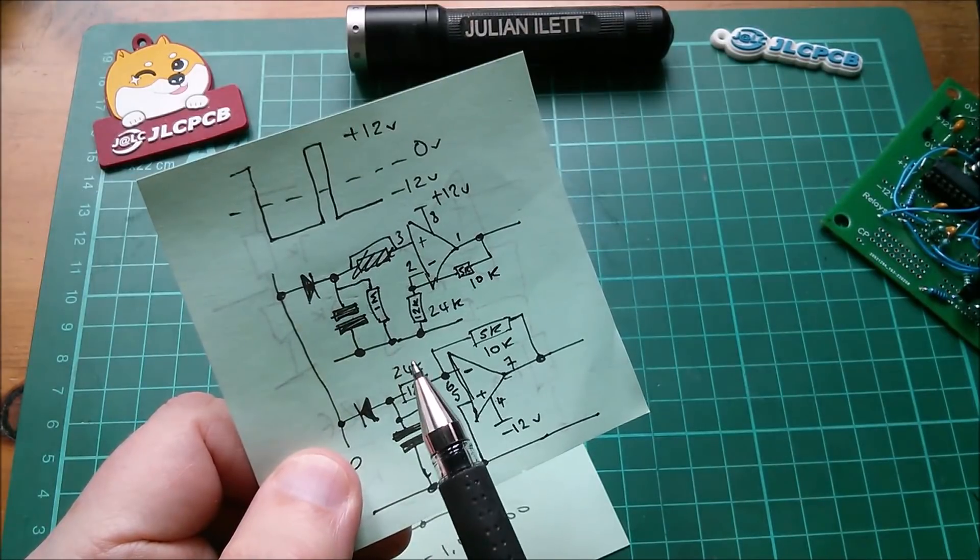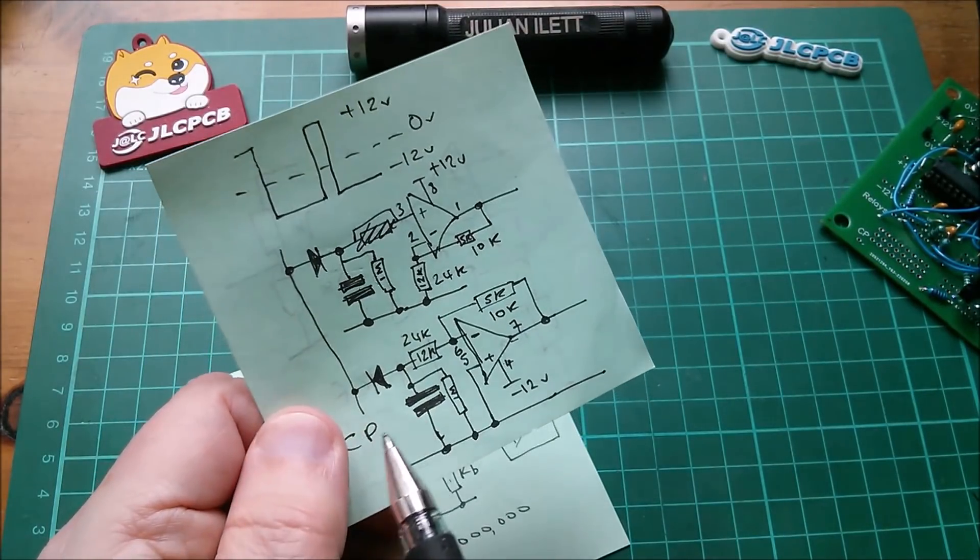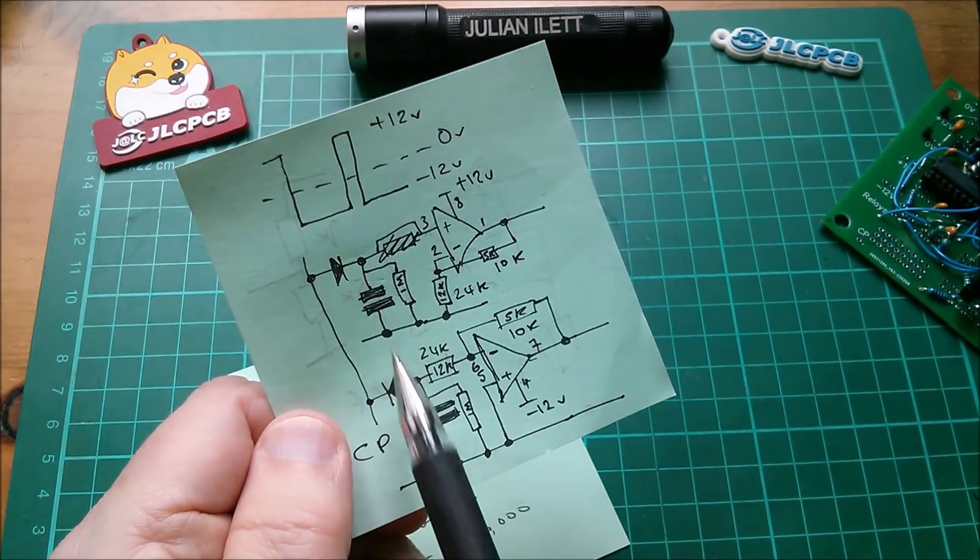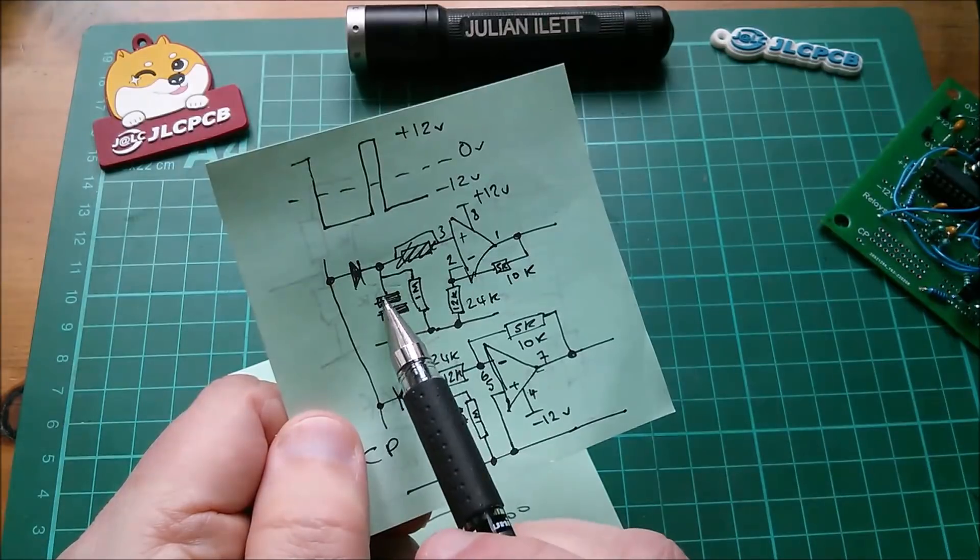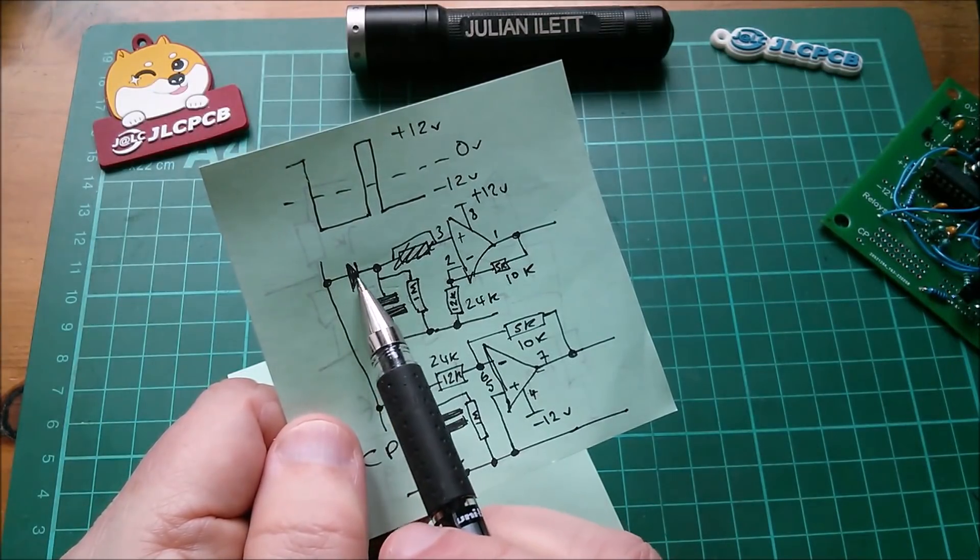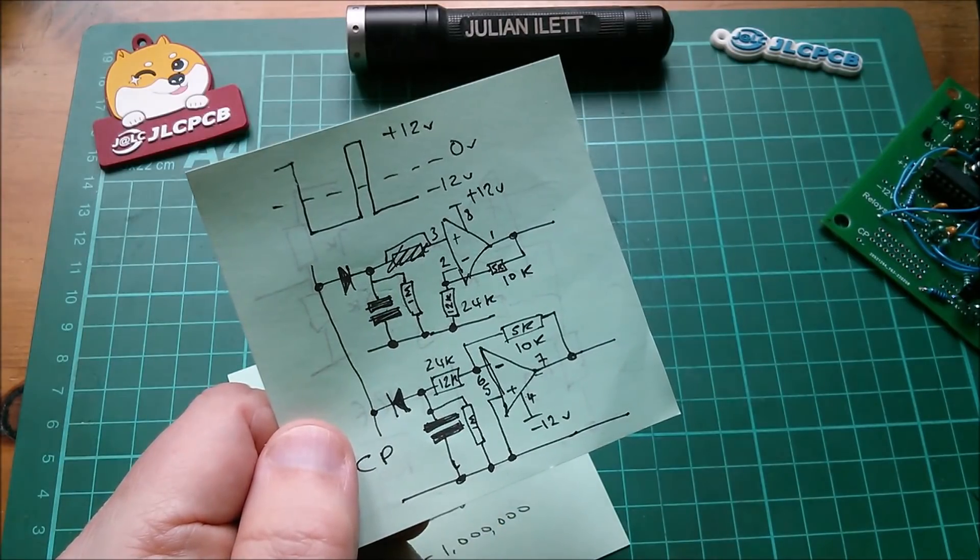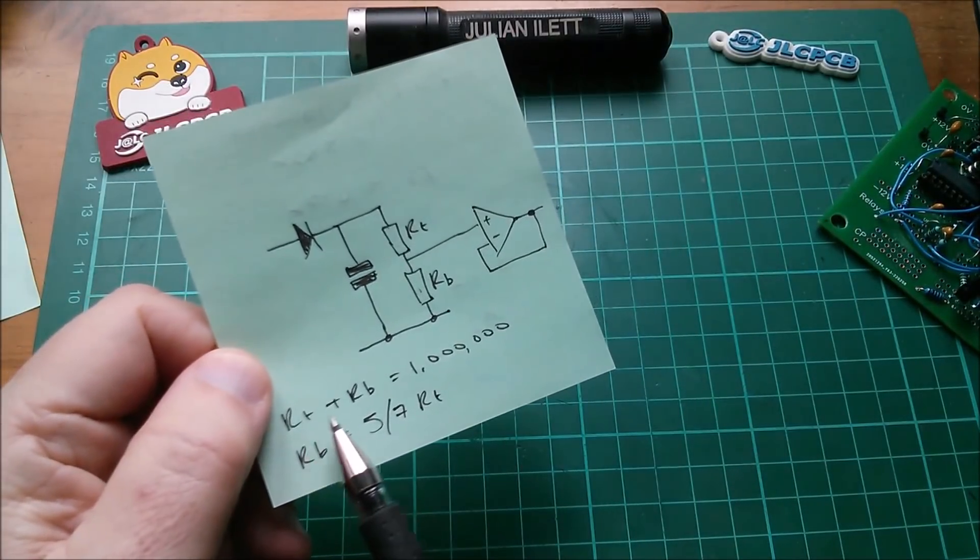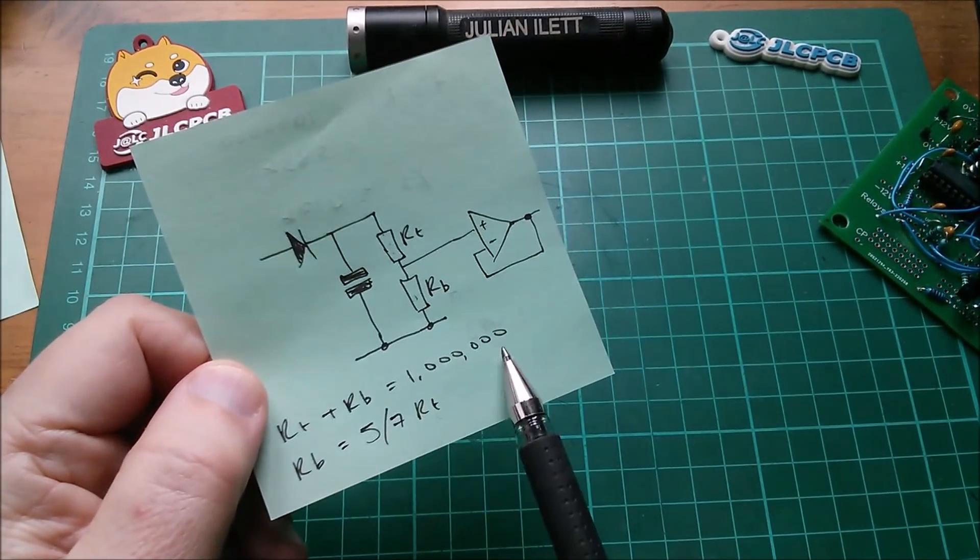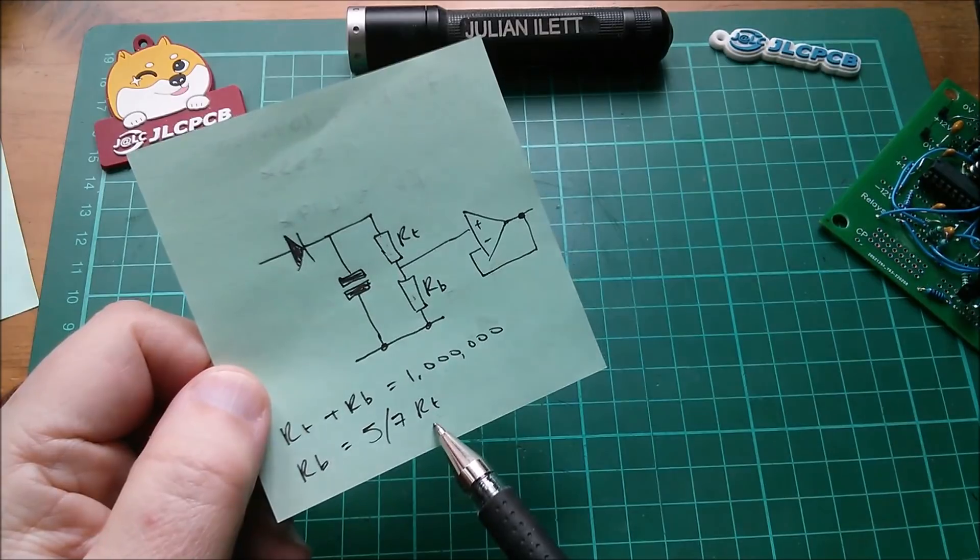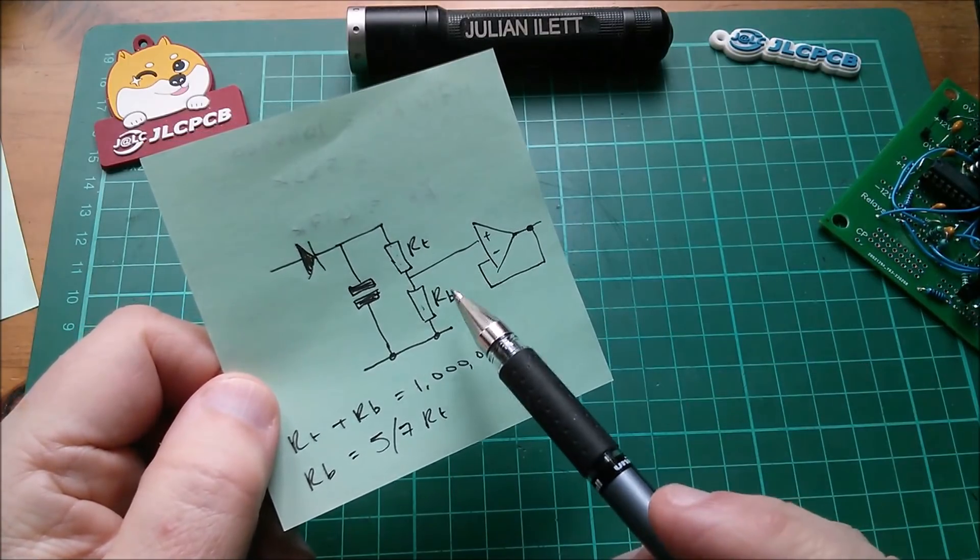Of that capacitor to ground, so that as the voltage on this CP line comes down, this capacitor voltage will come down with it. The capacitor of course will always be 0.6 volts less than this CP line courtesy of that diode. So Rt plus Rb equals a million, but we also want Rb to be five-sevenths of Rt.